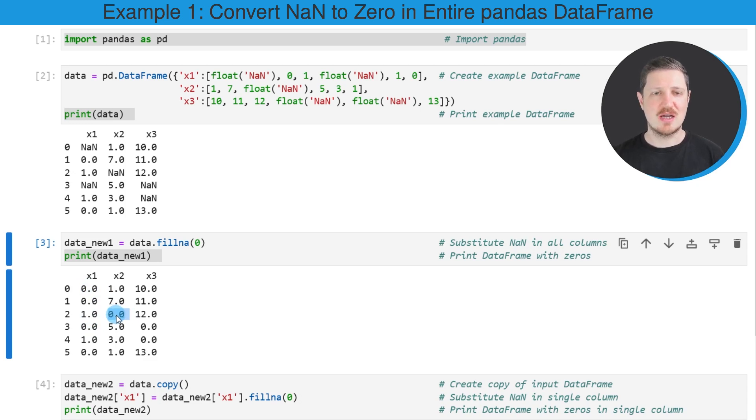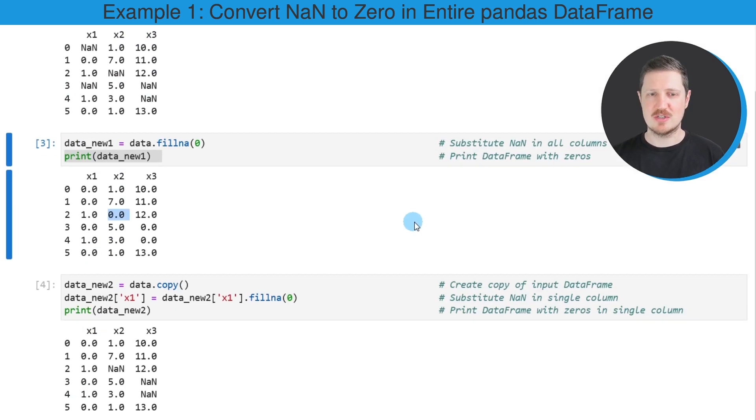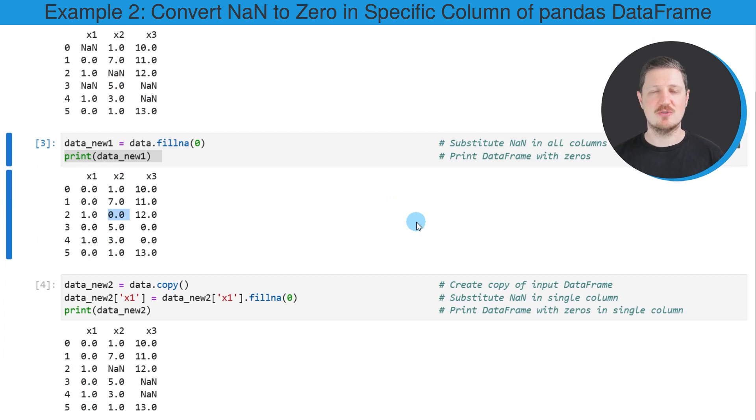In this first example, I have explained how to replace all NAN values by the value 0. However, it's also possible to replace the NAN values in only one of the columns by 0. This is what I'm going to show you in the next example in the fourth code box.